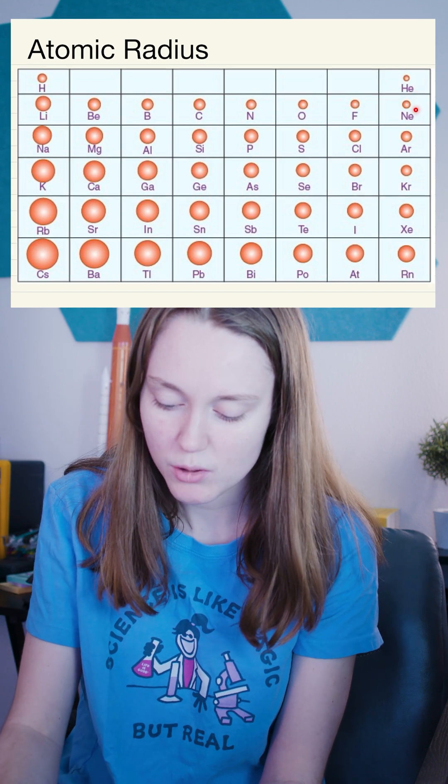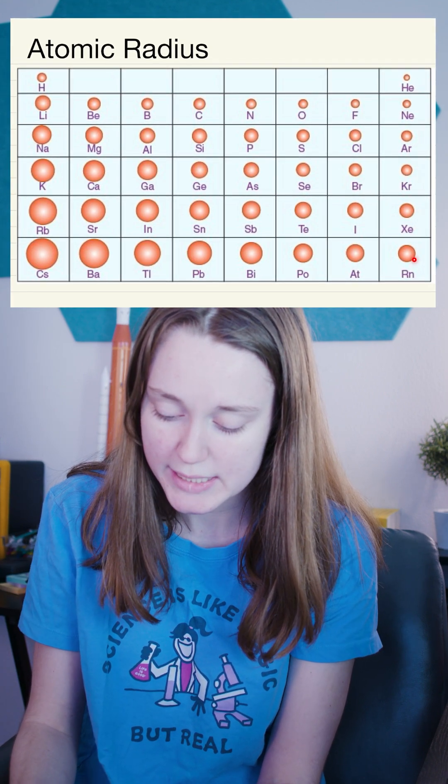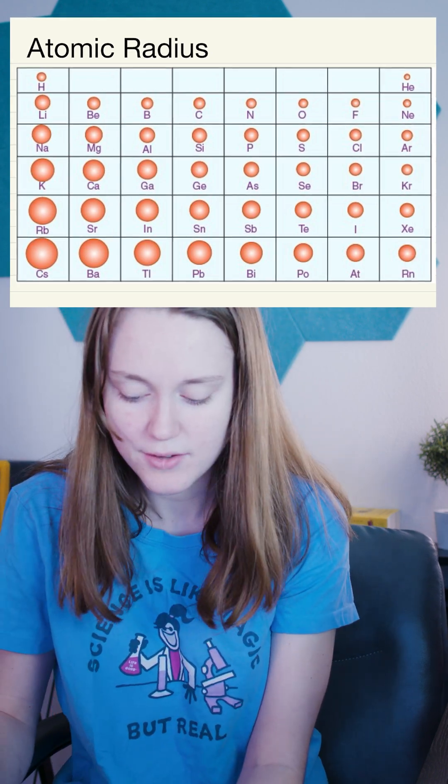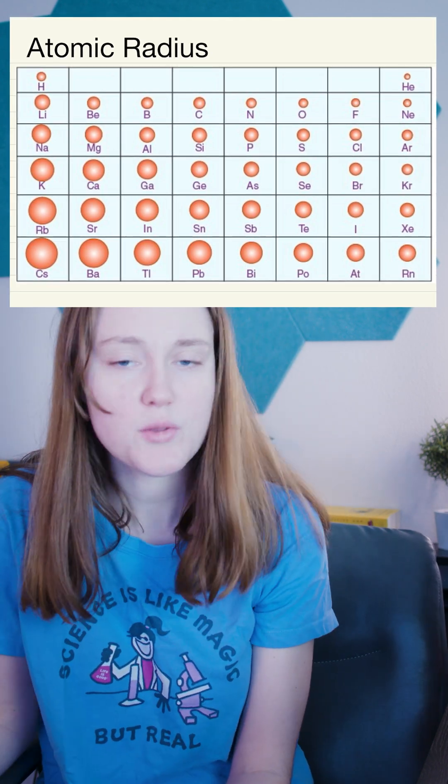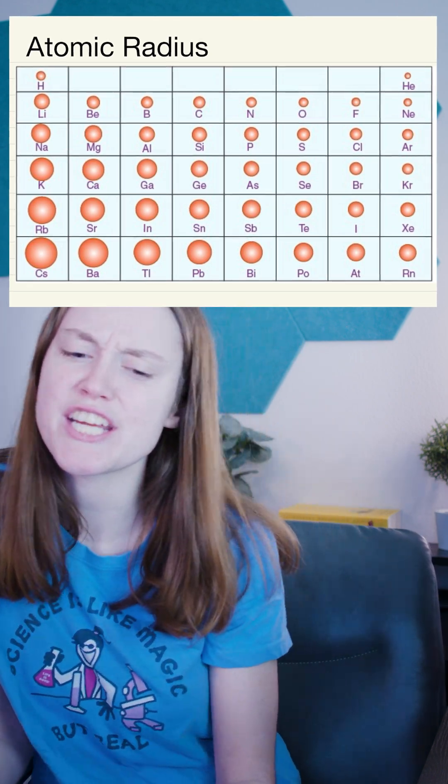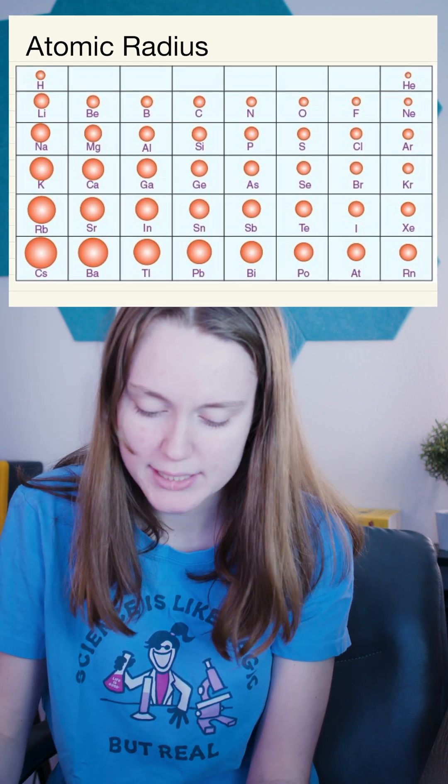And then as you are going down a group, you'll see that these atoms are increasing in size and that is because they have extra electrons. So these extra electron shells act as layers that are sort of pushing the outer electrons further and further from your nucleus.